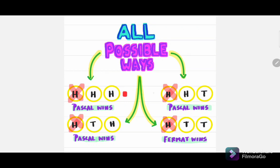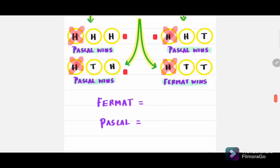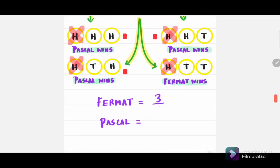And Pascal wins three of them. Thus they decided that Fermat should pay three-quarters of the bill and Pascal should pay one-quarter.